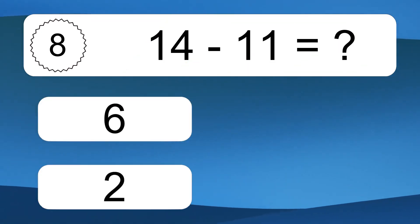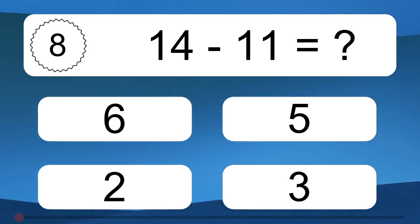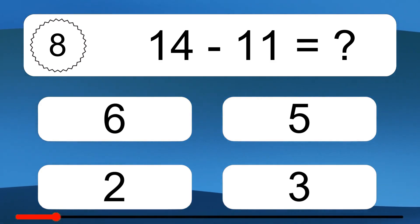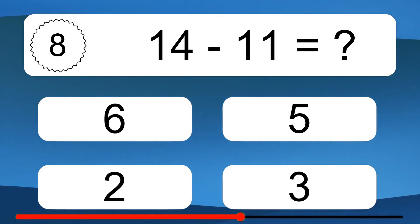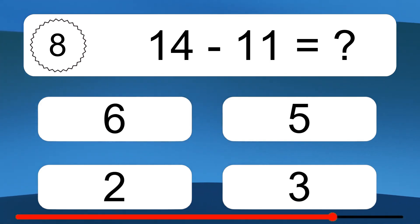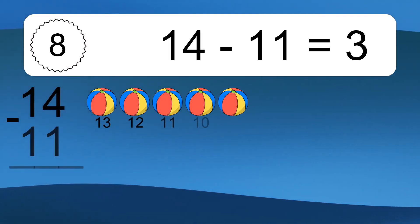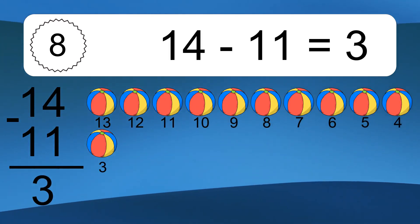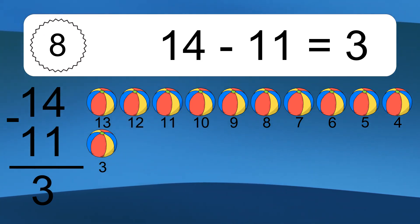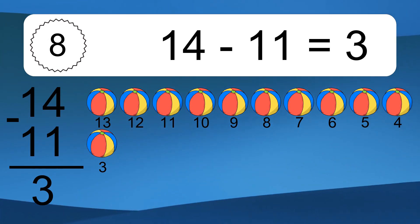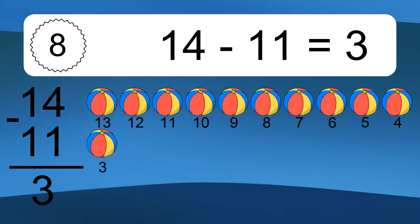14 minus 11 equals what? 14 minus 11 equals 3. Let's count it. 13, 12, 11, 10, 9, 8, 7, 6, 5, 4, 3.